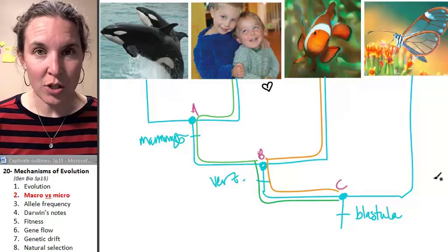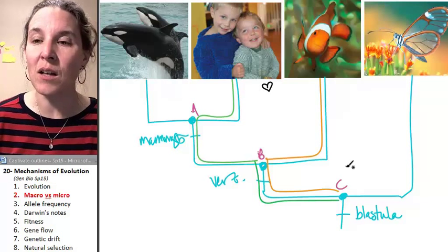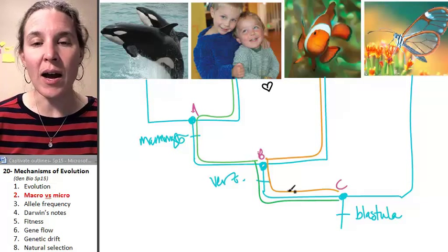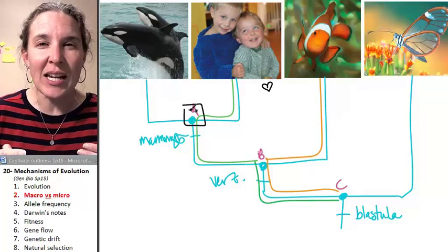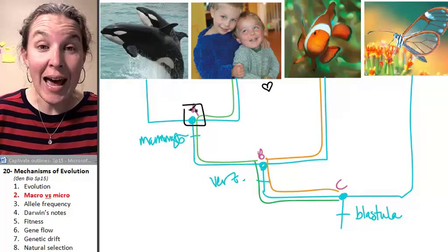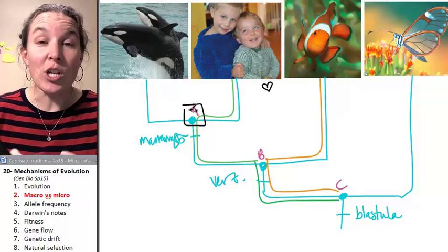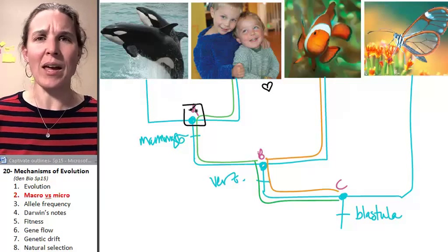Often when we think about evolution, we think about speciation. And we talked about this a lot last week. We talked about how there's an ancestor long, long time ago that we actually had in common. We shared a recent common ancestor, humans and whales.